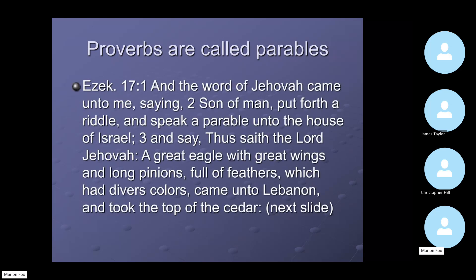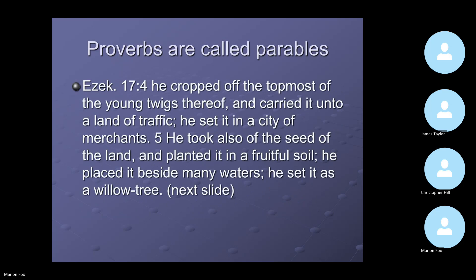In Ezekiel 17:1, the American Standard reads: 'And the word of Jehovah came unto me saying, Son of man, put forth a riddle and speak a parable unto the house of Israel.' A great eagle with two great wings and long pinions, full of feathers of diverse colors, came unto Lebanon and took the top of the cedar, and cropped off the topmost of the young twigs.